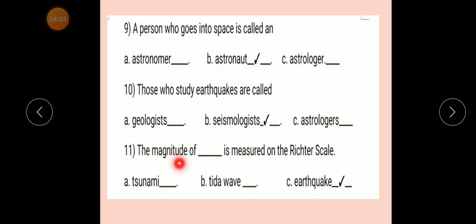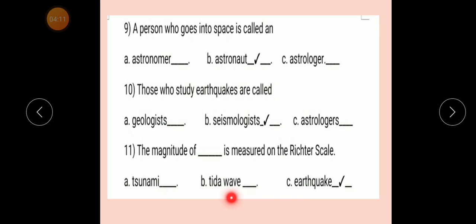Question number 11: The magnitude of dash is measured on the Richter scale. Option A: Tsunami. Option B: Tidal wave. Option C: Earthquake. Correct answer: Earthquake. The magnitude of earthquake is measured on the Richter scale.